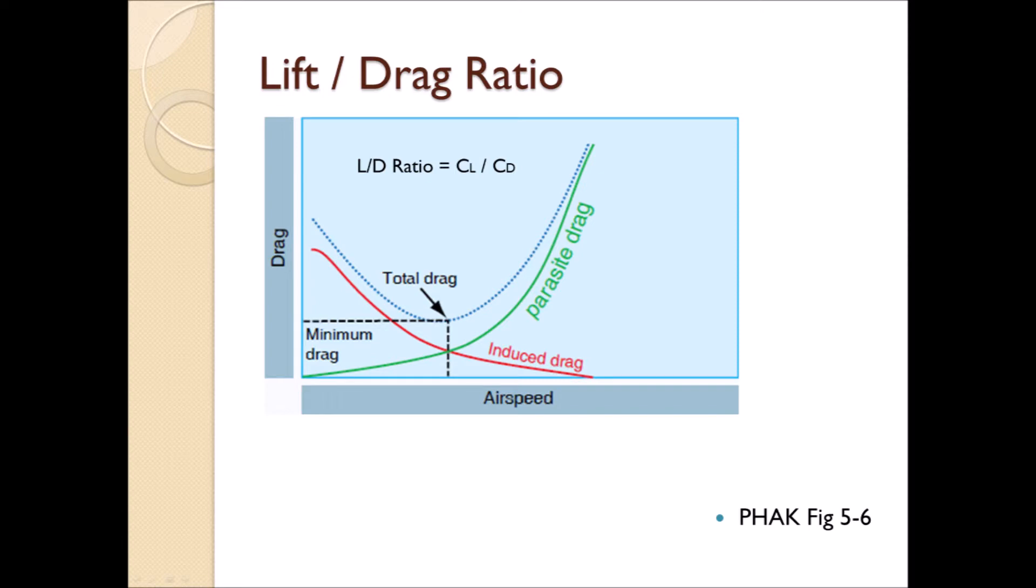The blue dotted line is the total drag. And at that certain speed, where the total drag is at minimum, is the same speed of the LD max. But what does that mean to us? That if we were to lose our engine, maintaining that airspeed will give us the least resistance or drag, thus letting us glide further. This is known as the best glide speed and can be found in your POH.